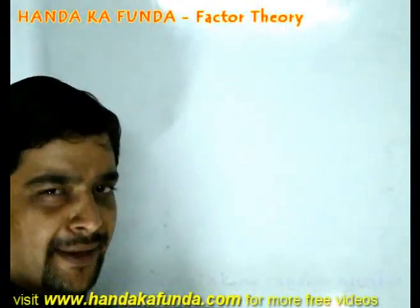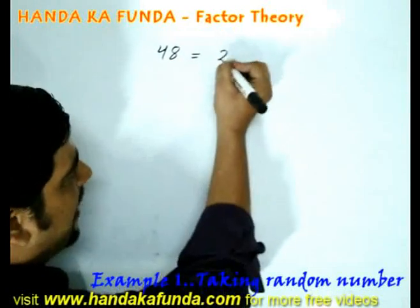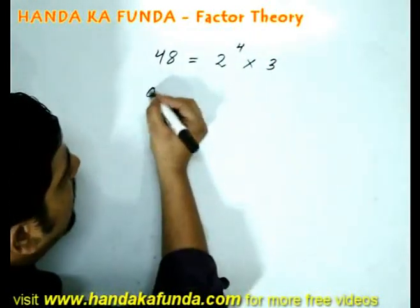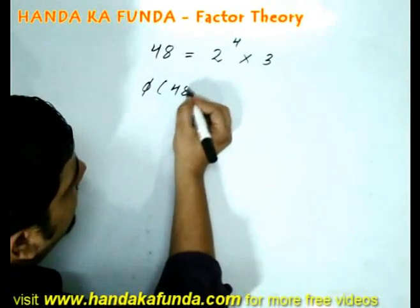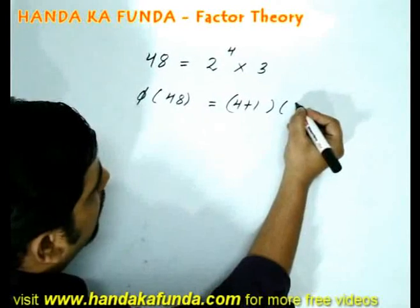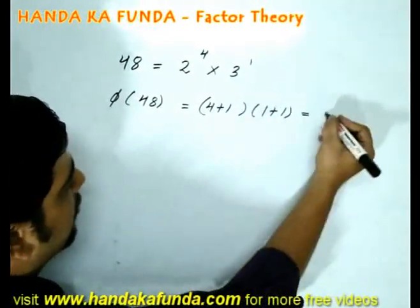Let us look at a few examples. For example, if my number is 48, that is effectively 2 to the power 4 into 3. The number of factors that 48 is going to have is 4 plus 1 into 1 plus 1. The power of 3 is 1. That is 5 into 2, 10.